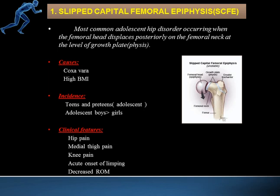That is slipped capital femoral epiphysis. The reasons for it include coxa vara and high BMI. Coxa vara is one of the most common reasons that can result in SCFE, and high BMI is another. The incidence is usually seen in teens and preteens — the adolescent period — and when adolescent age is combined with coxa vara and high BMI, there is a very high chance of developing SCFE.